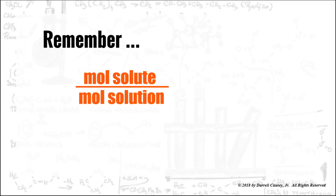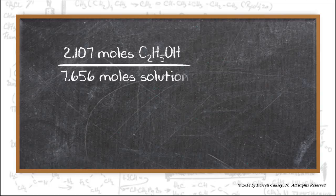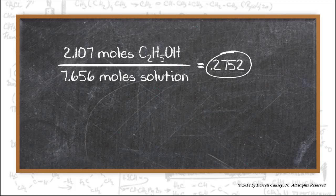Now remember that moles of solute per moles of solution will give us the mole fraction of solute. So to the blackboard, 2.107 moles of ethanol divided by 7.656 moles of solution will equal 0.2752. Now notice the unit is canceled out.